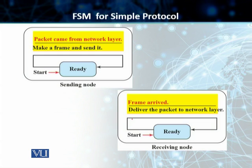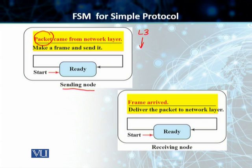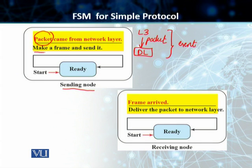Looking at the finite state machine for the simple protocol — in the first figure on top, the start state is 'ready.' This is the sending node. The event for the sender's state machine is that a packet comes from the network layer, i.e., layer 3 sends a packet down to the data link layer. As soon as this event happens, the machine makes a frame and sends it, then comes back to the same ready state and starts listening for the next packet from layer 3.